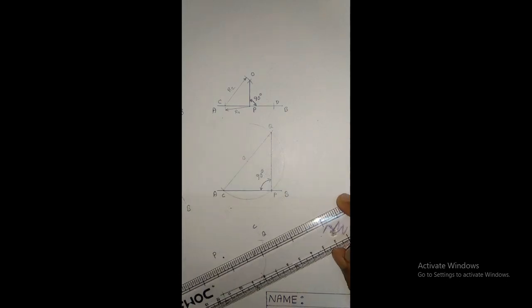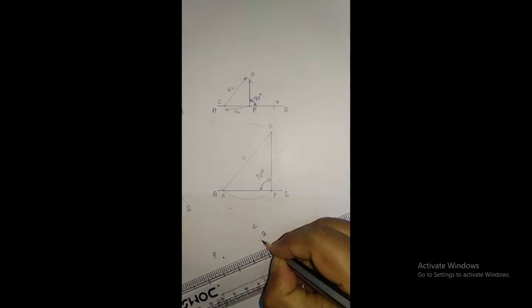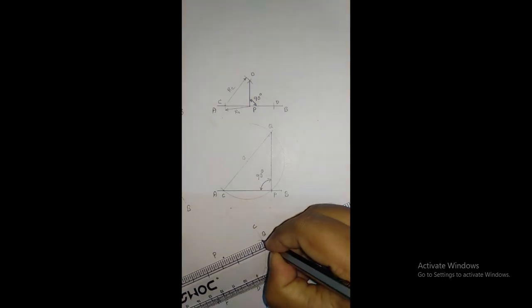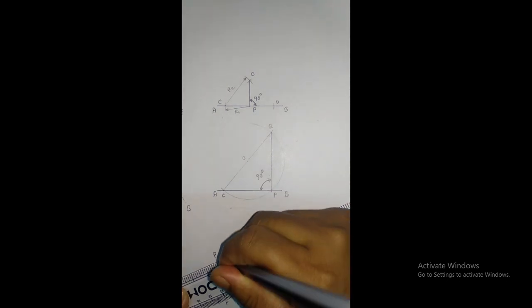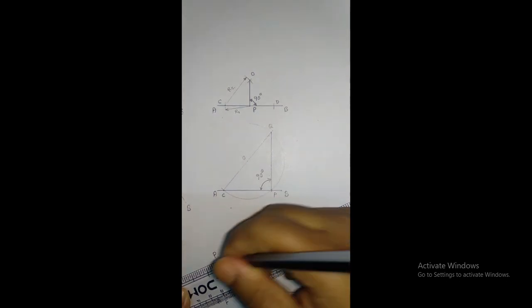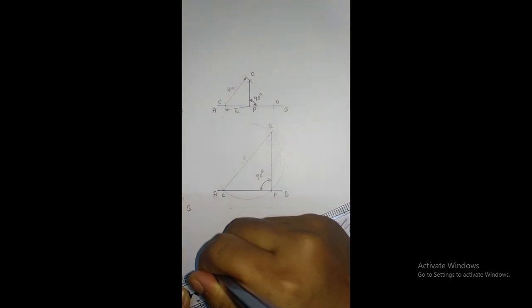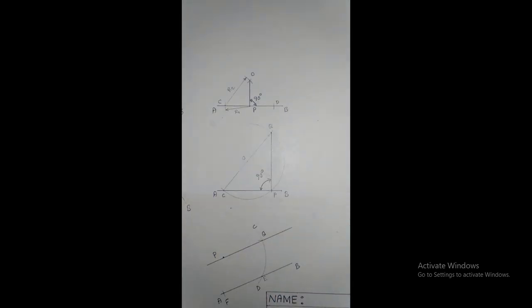Now join the points. If you join this line through Q and P, you can see that this is a parallel line to AB.